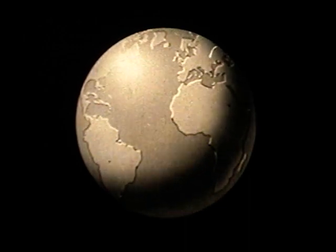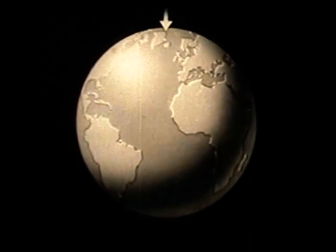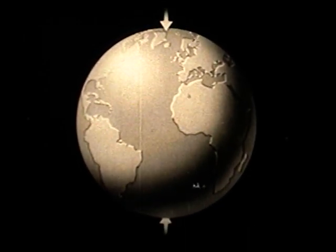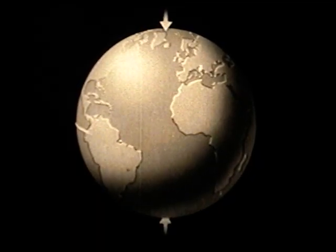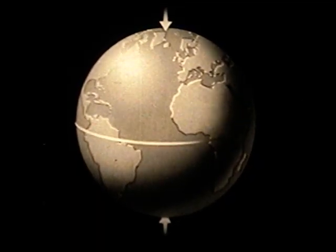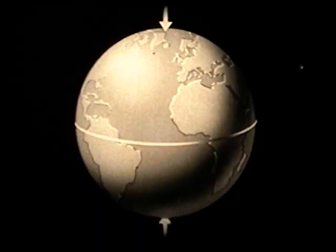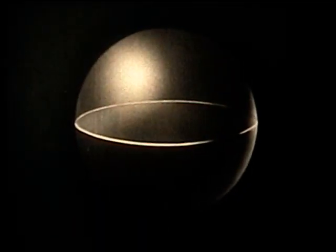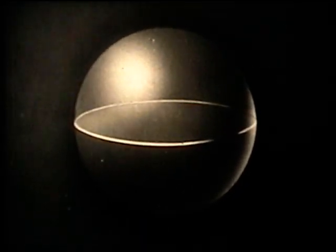First, let us see what is meant by latitude. Halfway between the north and south poles, a line can be drawn round the world, dividing it into equal parts. This is called the equator.